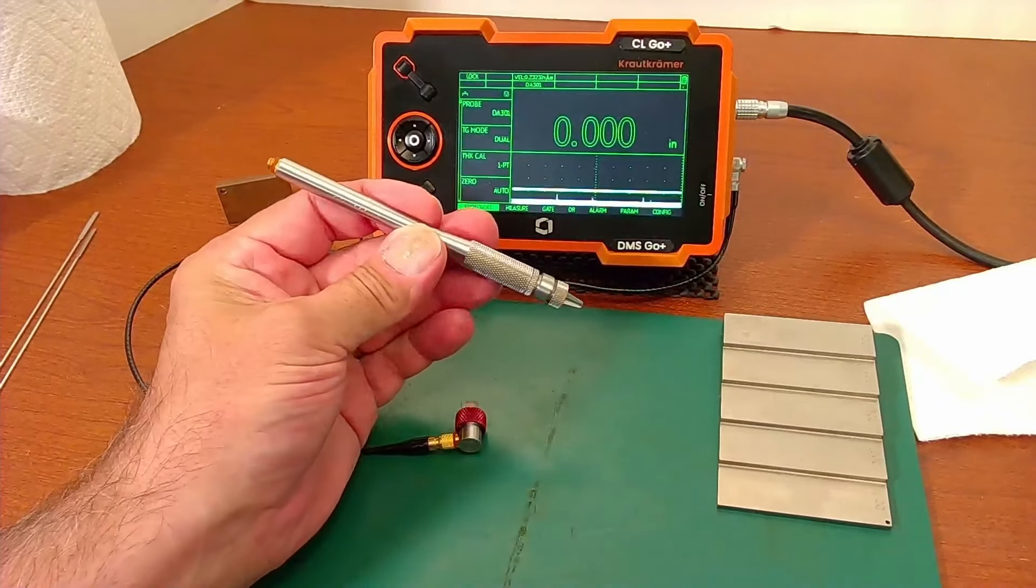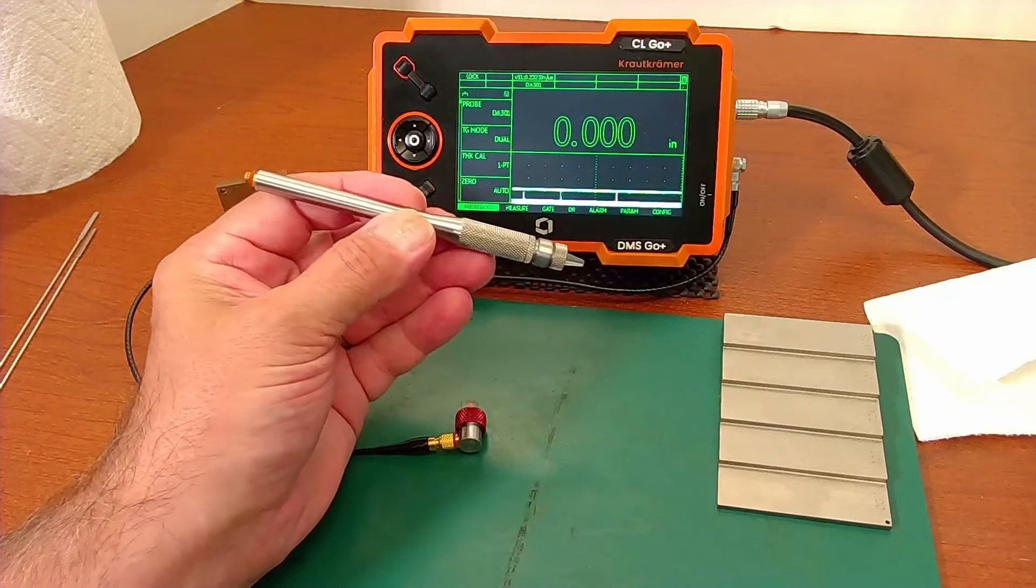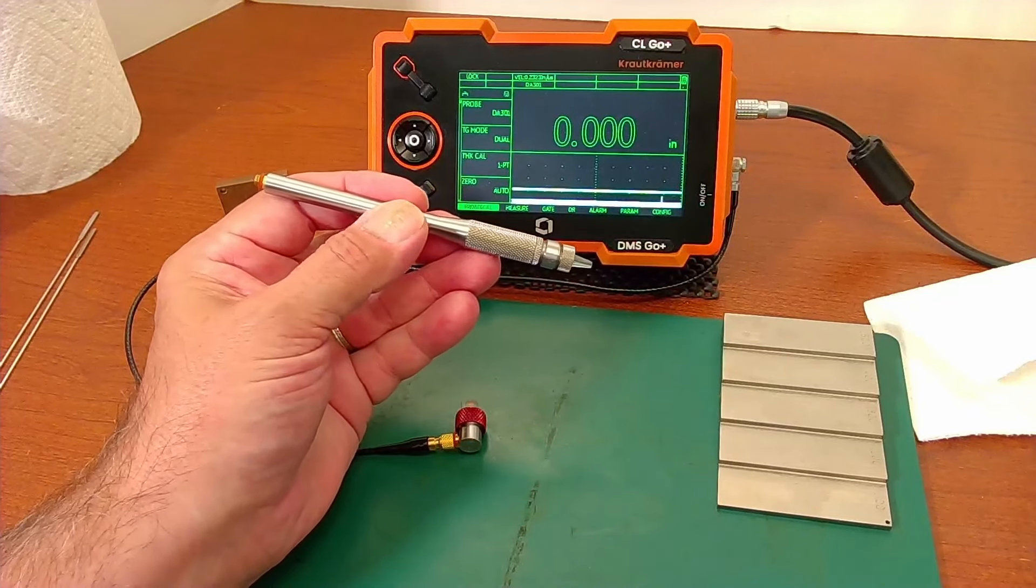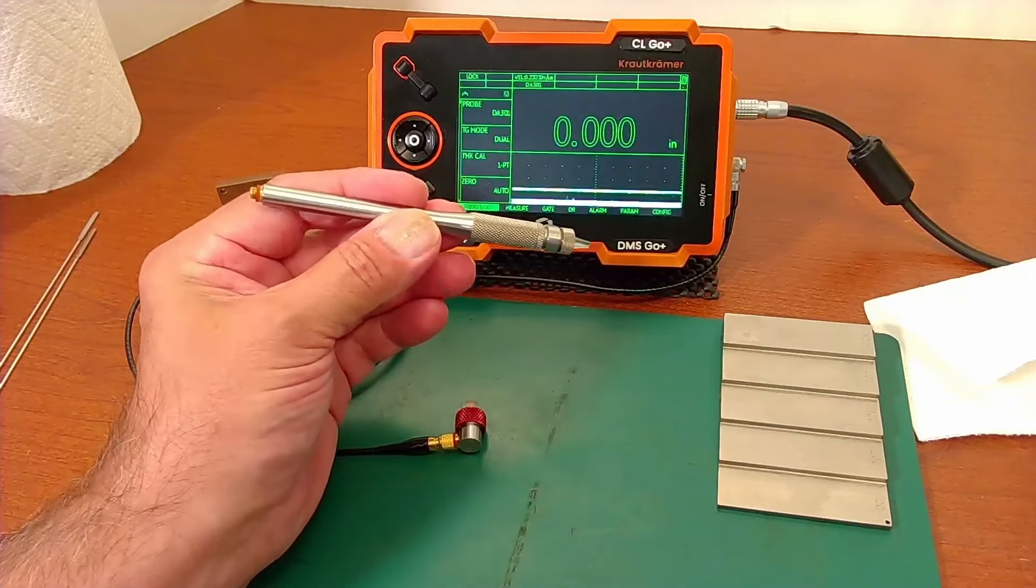While we do not have a specific probe definition file already set up on the DMS Go, you can start with one of the available files and with a few tweaks of the instrument settings, you can have it working quite well with the K-Pen.